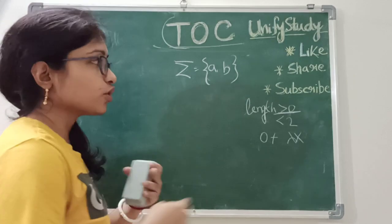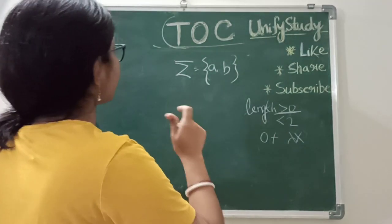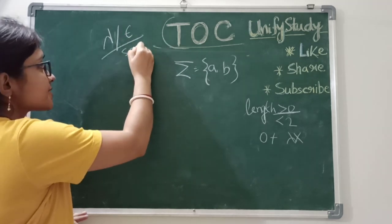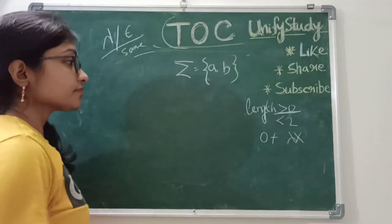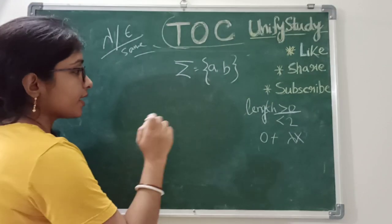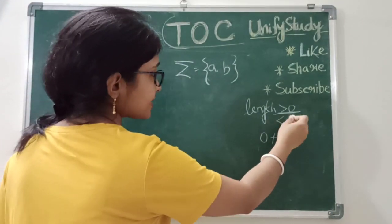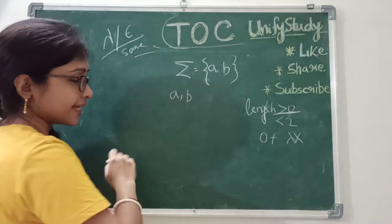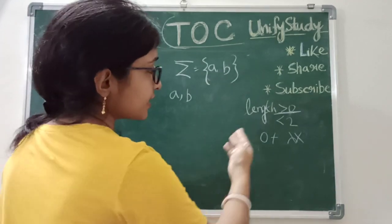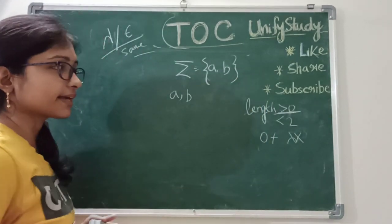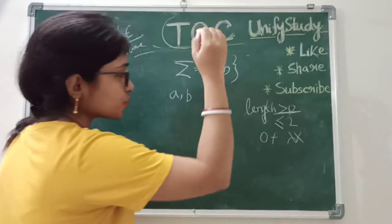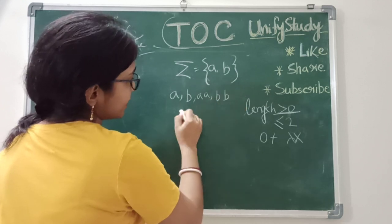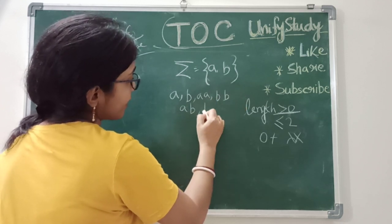Most of the time I will use lambda, but lambda and epsilon are the same — remember that. So here we will not take lambda. As it is greater than 0, I will take length-1 strings: A and B. And less than 2 means I cannot take length-2 strings. If it were less than or equal to 2, then we could also take AA, AB, BA, and BB.